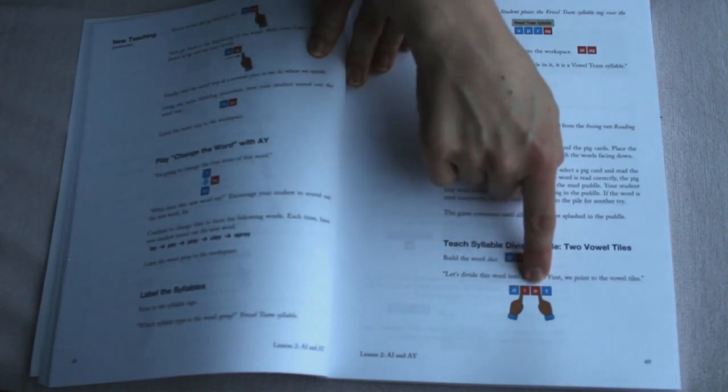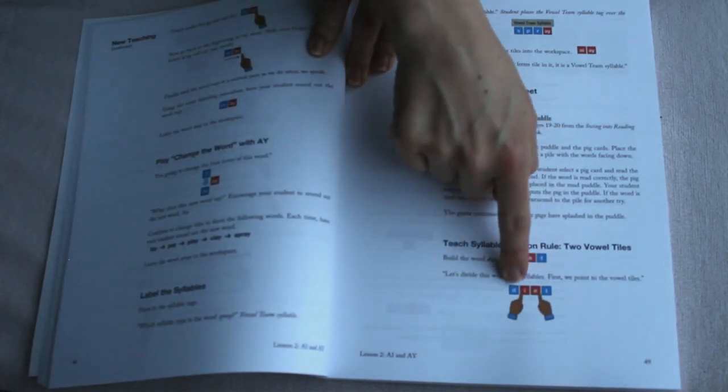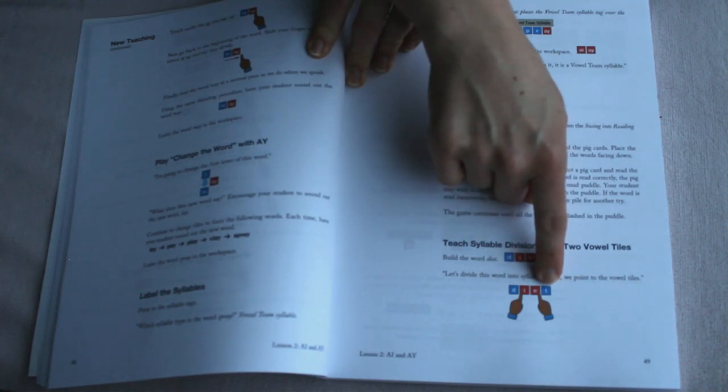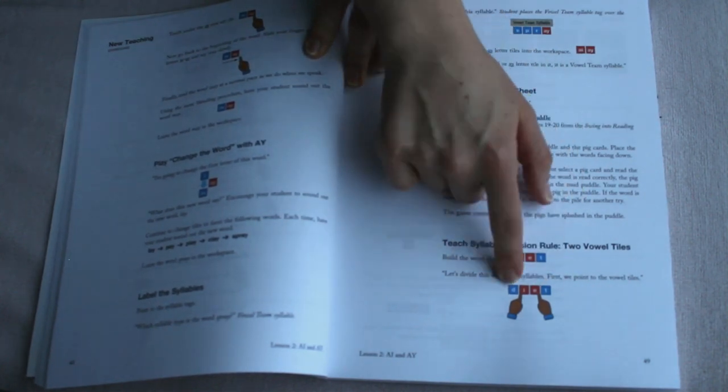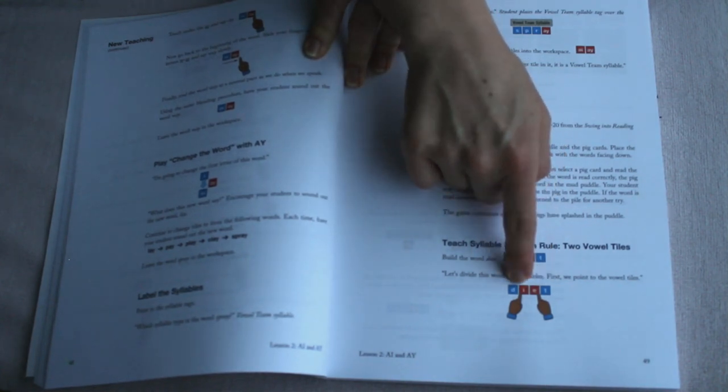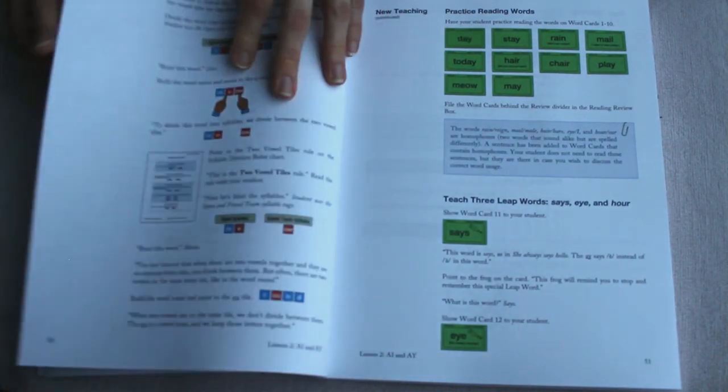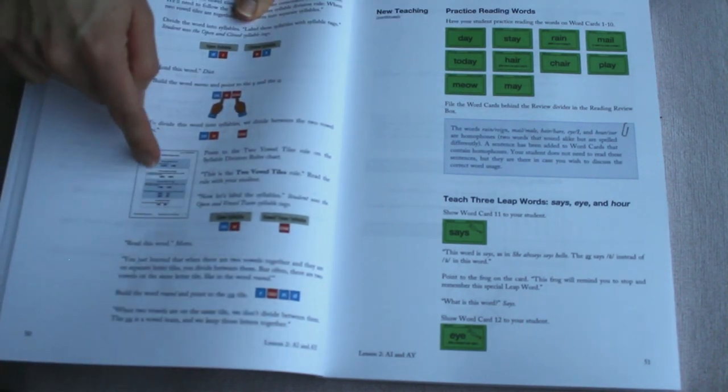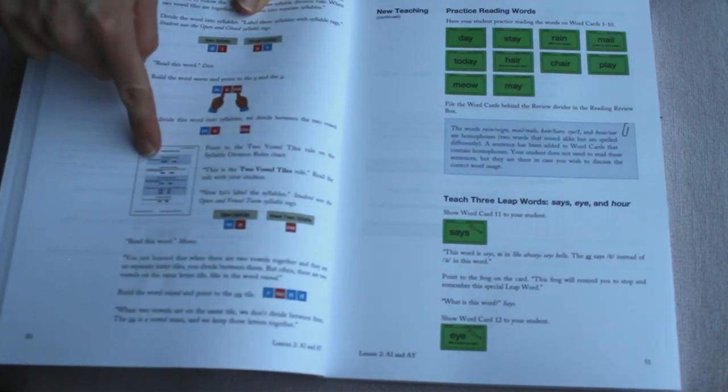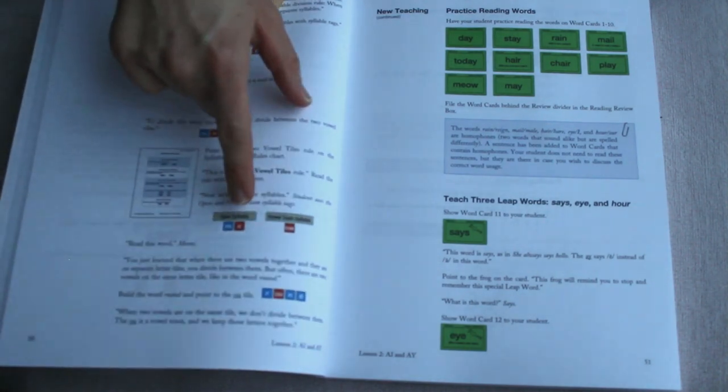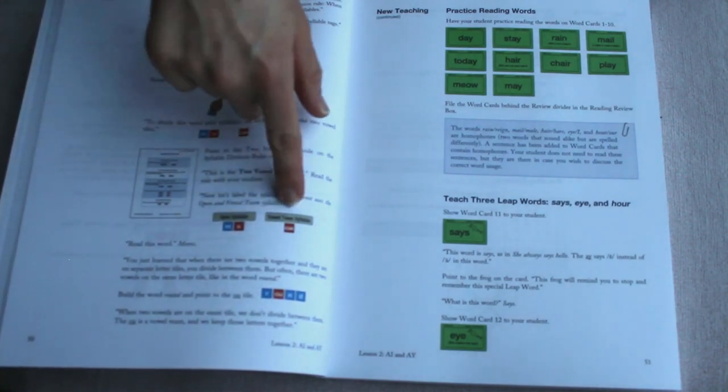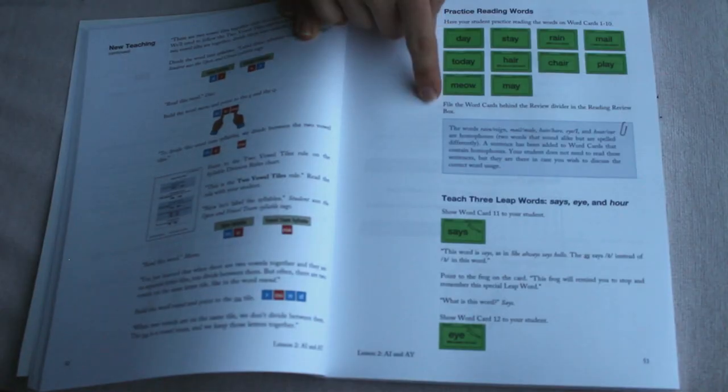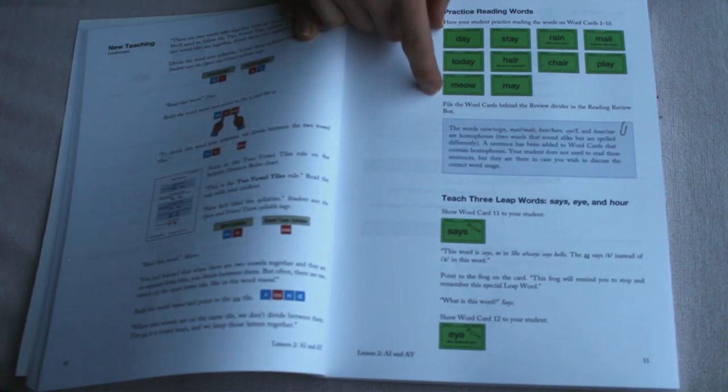Then, it goes back to this syllable division rule with two vowel tiles where you split the syllables. So, in this one, you find the two vowels split it down the middle, and since the first one is an open syllable, meaning it ends in a vowel, it's die, and the second one is a closed syllable, meaning it ends in a consonant, it's et. Because open syllables have long vowel sounds, closed syllables have short vowel sounds. Die, et, diet. And that's what it goes through here in painstaking detail. Then it applies a similar rule to meow. Then it goes over the word cards that you review.